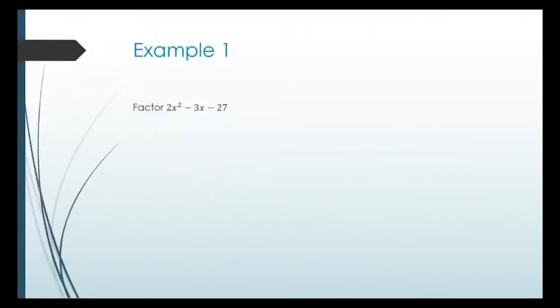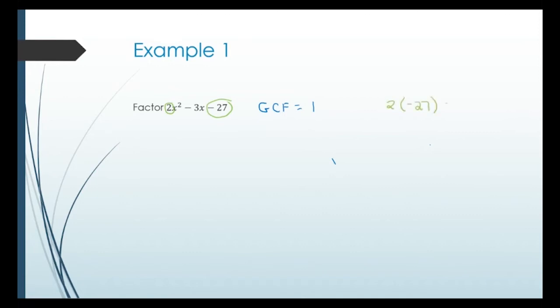The example is 2x squared minus 3x minus 27. First, check for a greatest common factor: we have 2, 3, and 27. 2 does not divide into 3 or 27, so there's no GCF — it's just 1. So we go straight to the AC method: we take A times C, which is 2 times negative 27, and that gives us negative 54.